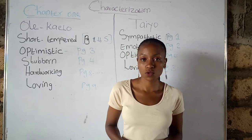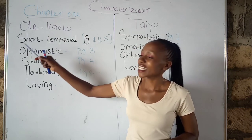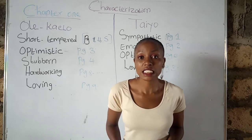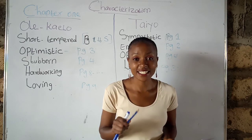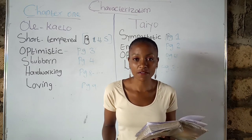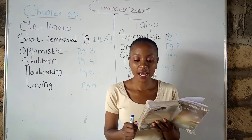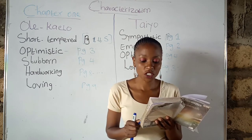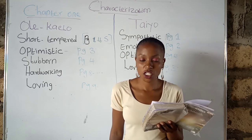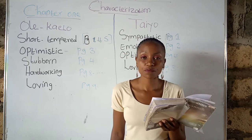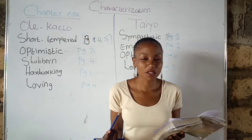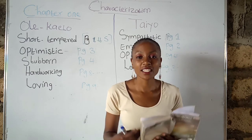Let's start with Ole Kyalo — you know who he is already: the father to Tayo and Resian, and the husband to Mama Milanoi. He is short-tempered; he gets angry very easily and very quickly. The first instance we learn this is from Tayo, on page one, first paragraph: 'Beneath her down at the courtyard she could see her father moving, organizing and directing with obvious shortness of temper.'